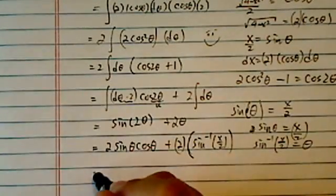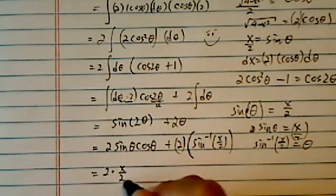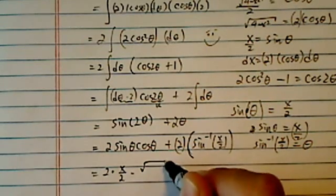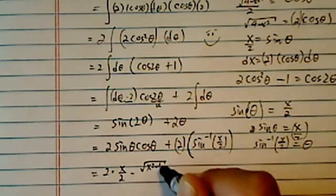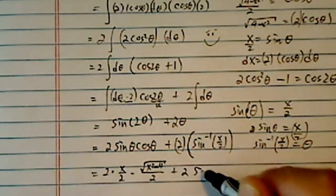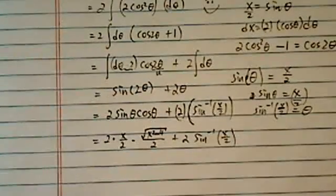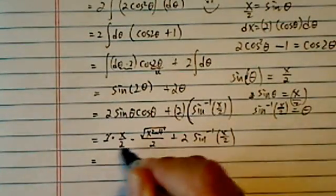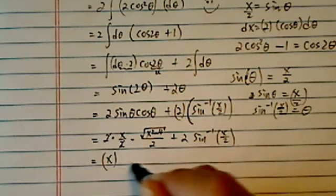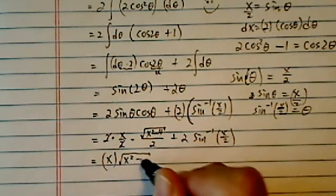Well actually, one more step. Let's clean this one up. It's 2 times sine theta is x over 2. And cosine theta is radical of x squared minus 4 over 2. And then plus twice arc sine x over 2. It's a little messy, but hey, as you get to this level, this is grateful we can actually have a closed form for this integral.